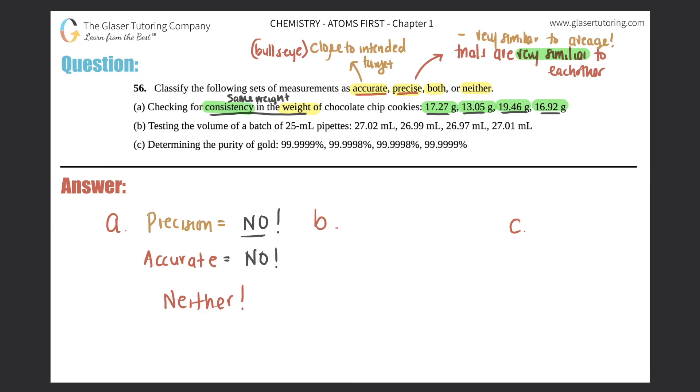Part b: Testing the volume of a batch of 25 mL pipettes, and here are your results: 27.02 mL, 26.99, 26.97, 27.01. So let's look at precision first. Do you think that these experimental trials are very similar to each other or very far apart? I would say that they are very similar to each other. 27.02 is very close to 26.99 - it's basically 27. These are very close as well.